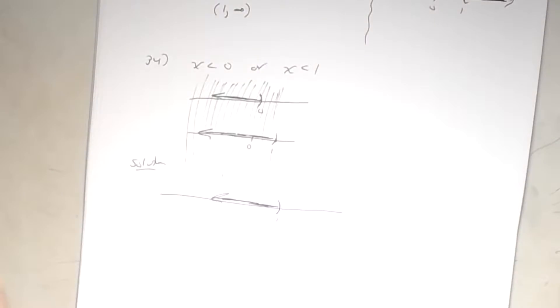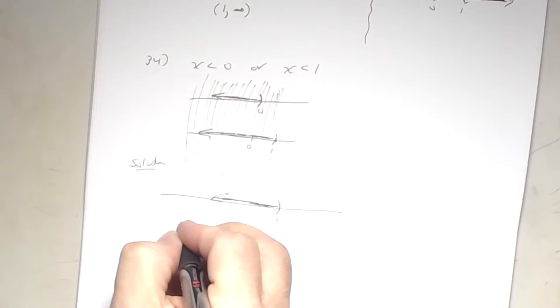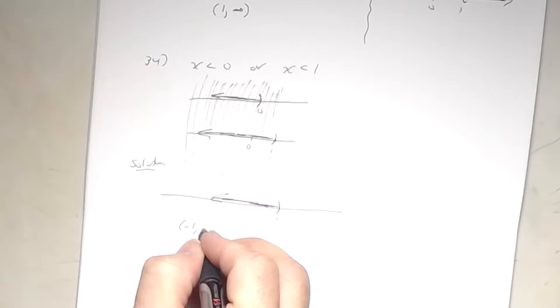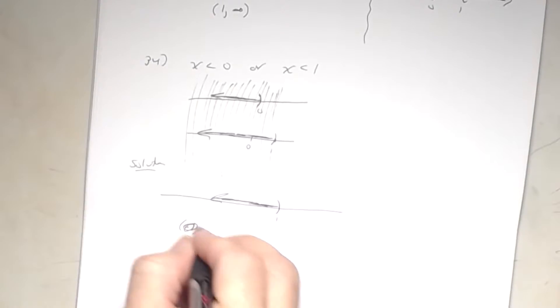Some students have trouble with interval notation when the arrow points left. The arrow going left means negative infinity. Always read the graph left to right, so don't say '1 to negative infinity' — it's negative infinity to 1. Interval notation: parenthesis negative infinity, comma 1, parenthesis. That was number 34.